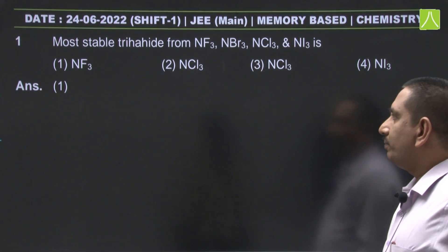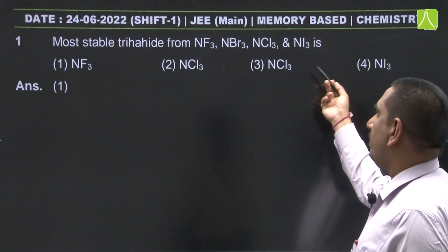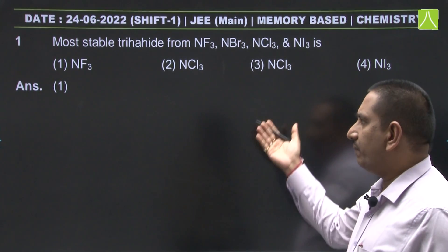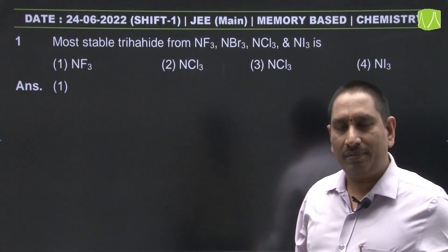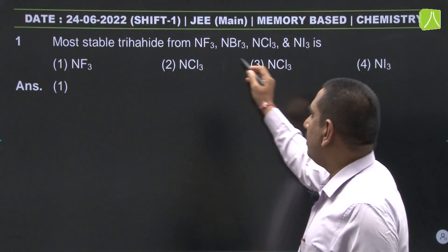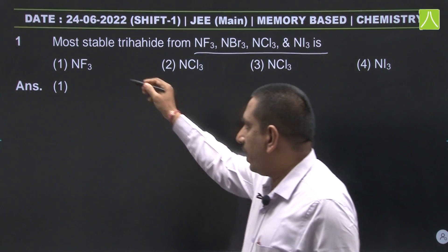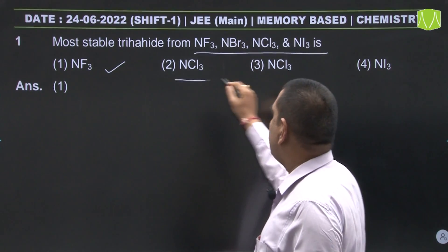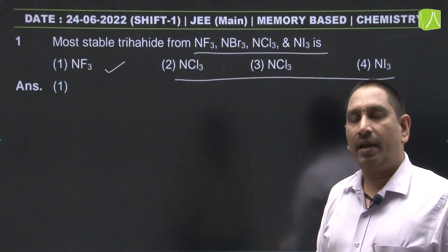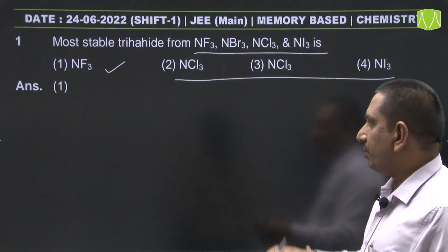The first question: the most stable trihalide from NF3, NBr3, NCl3, and NI3. These are factual questions from NCERT. The most stable nitrogen trihalide is nitrogen trifluoride; the rest are explosive, meaning they are unstable. So the answer is NF3.